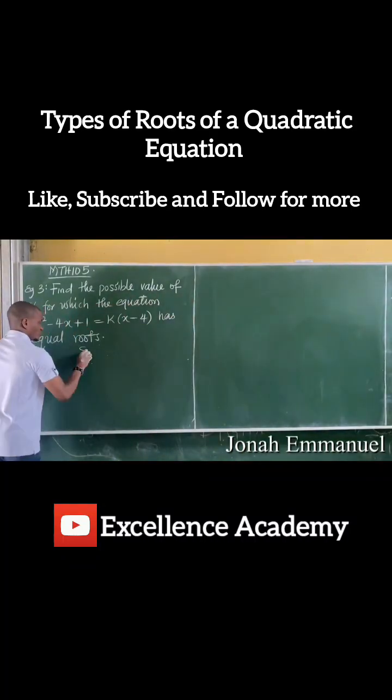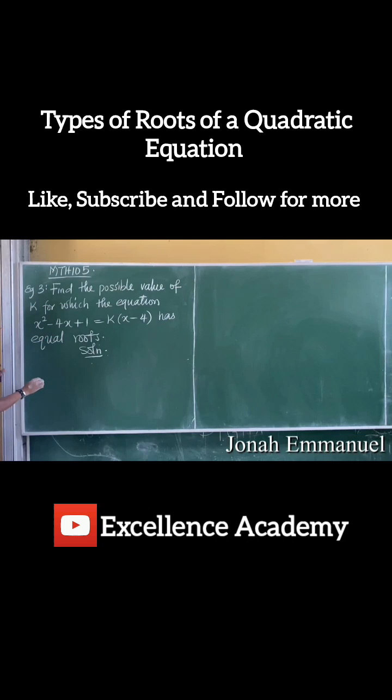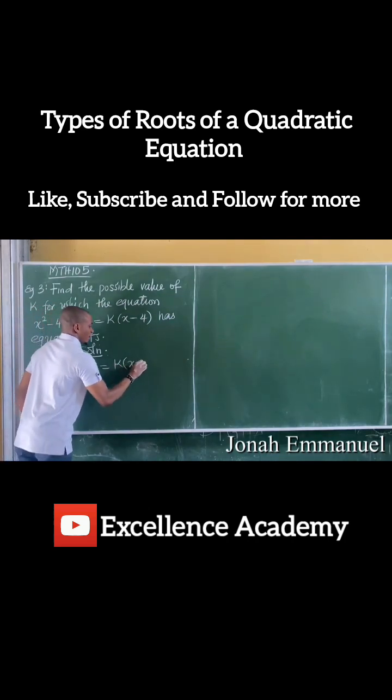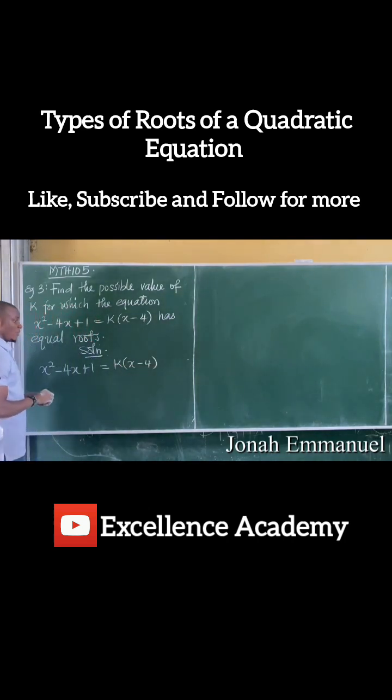Solution. Okay, so we are given the equation, the quadratic equation: x squared minus 4x plus 1 equals k into x minus 4.